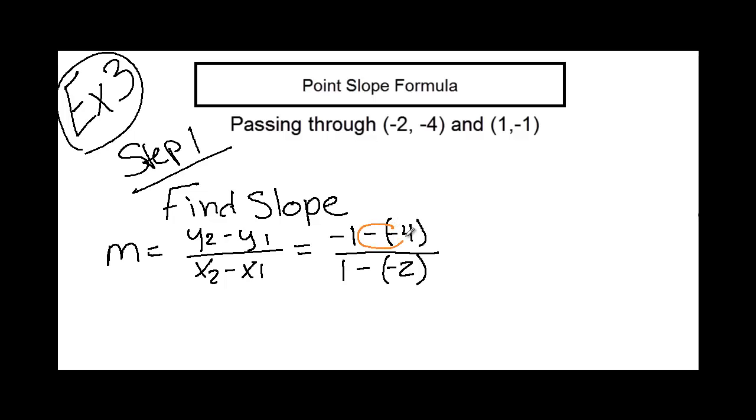Now, these two negatives here and here become positive. So now we have negative 1 plus 4 over 1 plus 2, which then equals 3 over 3, which reduces to 1, so our slope is equal to 1.